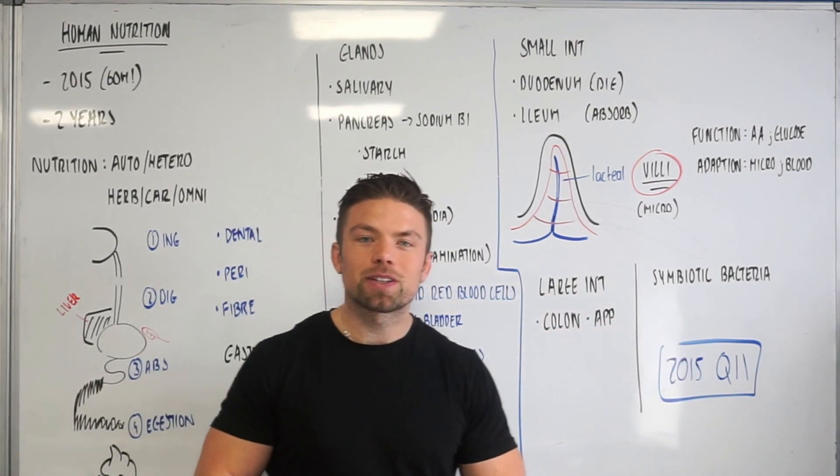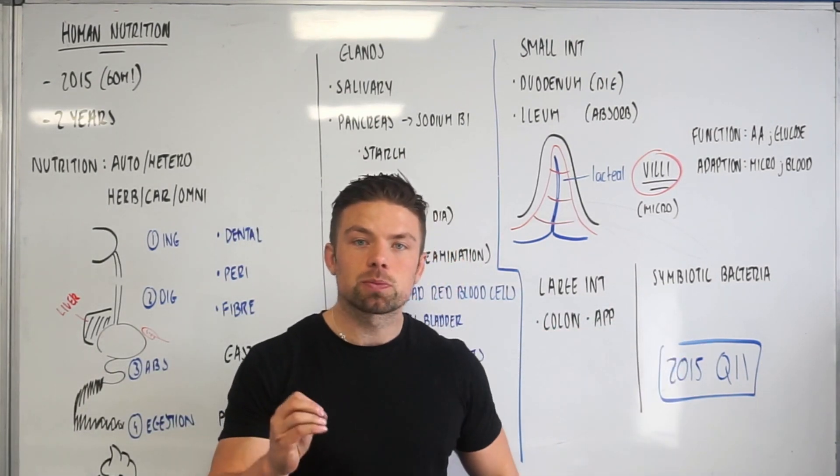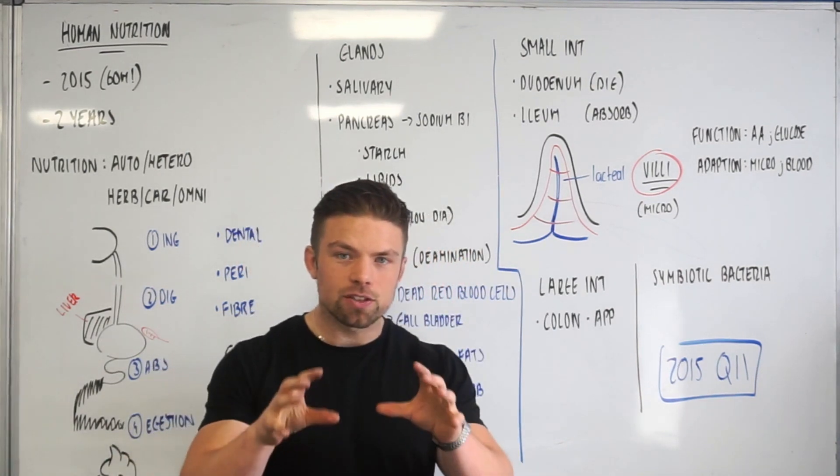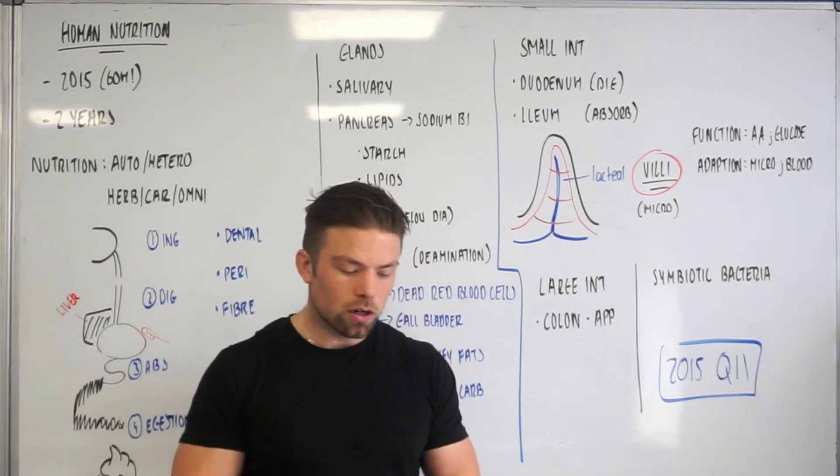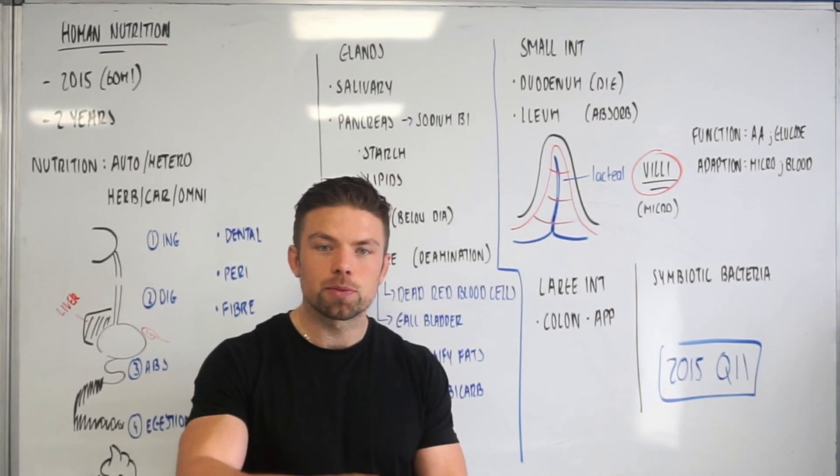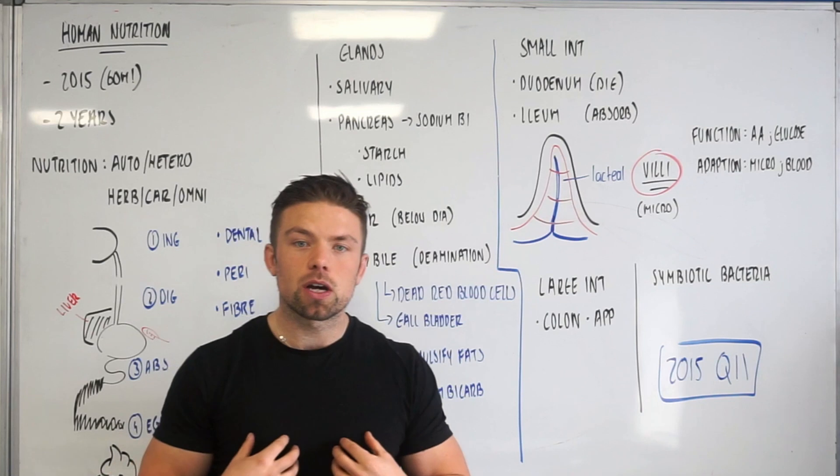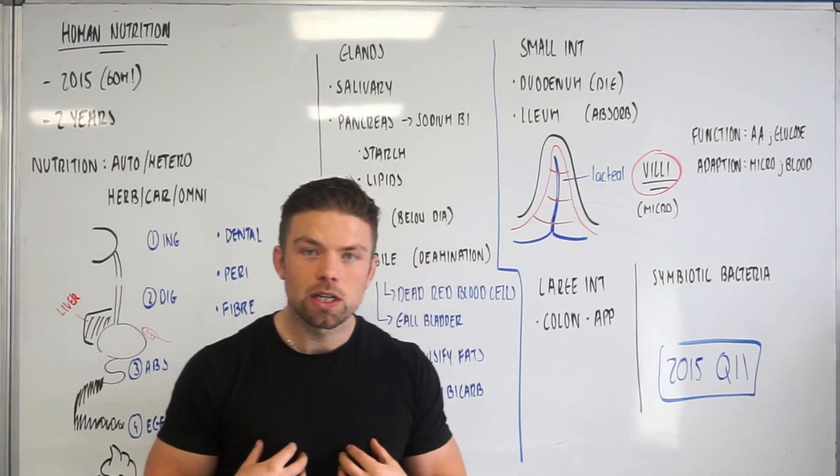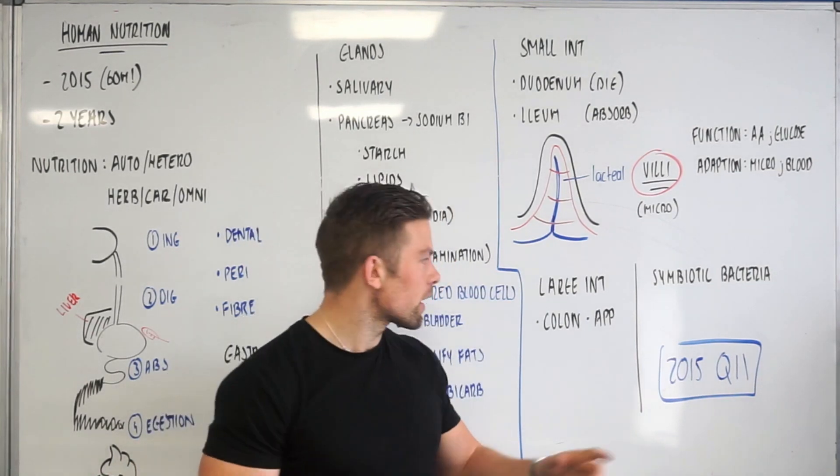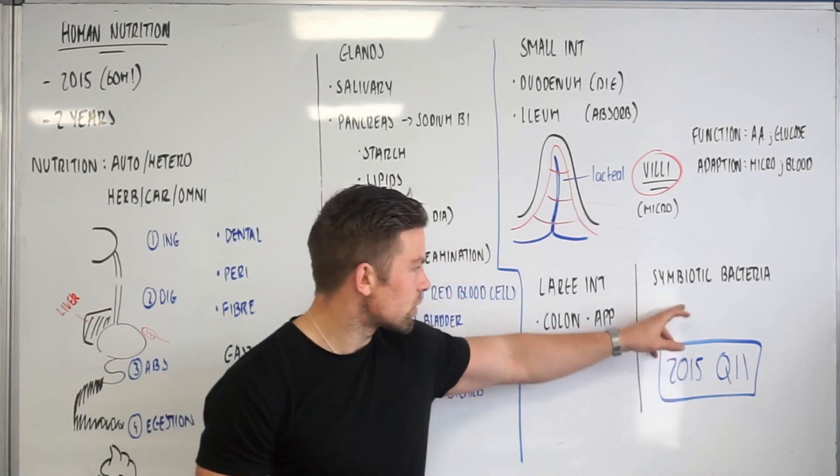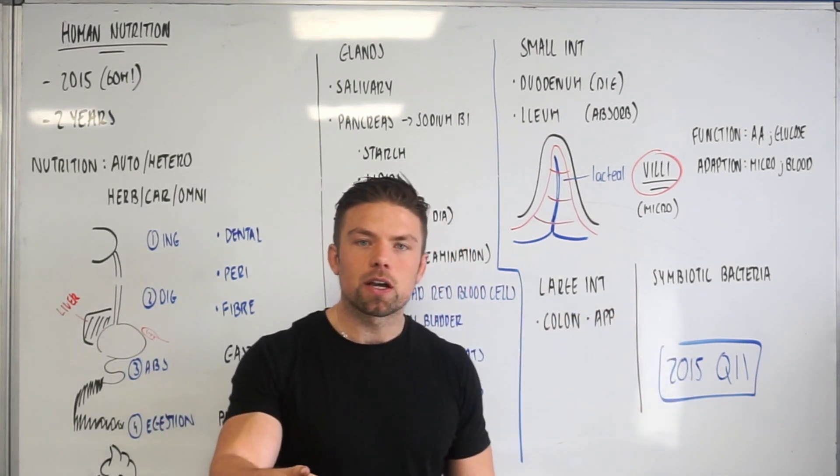And then the last part we need to know is about symbiosis - again, possibly you know from ecology. But symbiotic bacteria is bacteria that lives inside your digestive system. Not only does it get some food and shelter from you, but then for you it produces vitamins that we could not actually produce in our body otherwise, and they're massively important. So symbiotic or symbiosis relationship, it works for both parties.